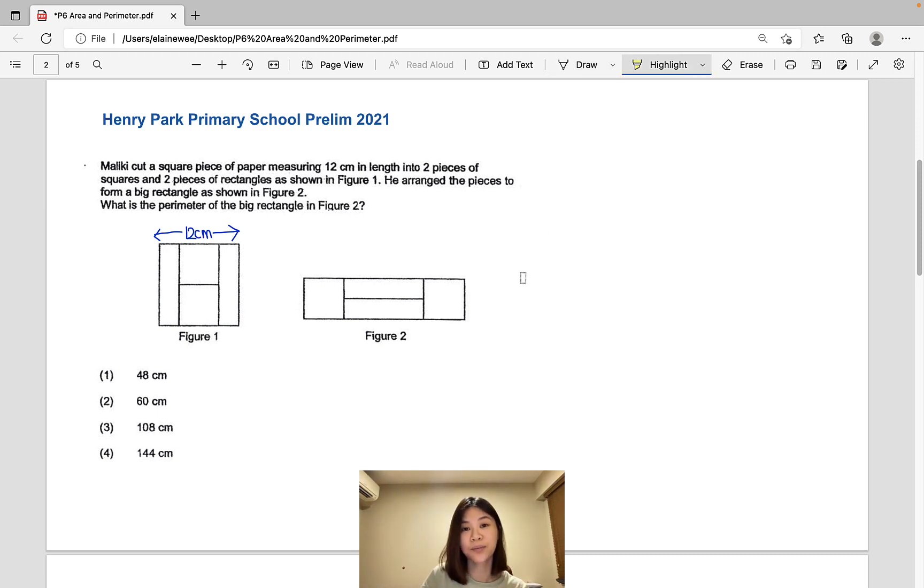Let's focus on figure 2. We can see clearly that two breadths of the small rectangle makes up one side of the square. So if the breadth is 1 unit each, that means one side of the square is 2 units. Now let's look at figure 1. We can see clearly that two sides of the square makes up the length of the rectangle. So what that means is 2 units and 2 units makes up the length of the rectangle, which is 4 units.